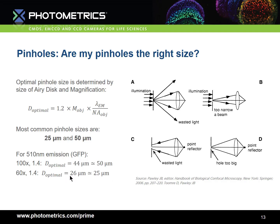However, what happens if we use a pinhole that's not quite the right size? In the case of a pinhole that's too small, as in A and C of this diagram, for the illumination path a too-small pinhole will diffract light too much. This light won't be able to be focused to a tight point in our focal plane by the objective, and will therefore waste light. Further, in the emission path, a pinhole smaller than one Airy disk will unnecessarily block light from our chosen focal plane as well, reducing transmission for no real gain in resolution or contrast.